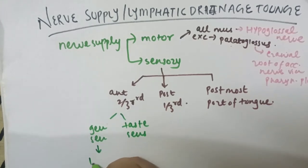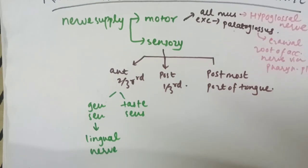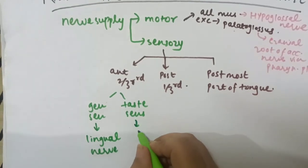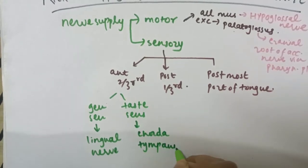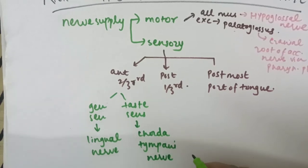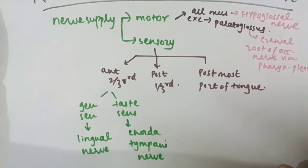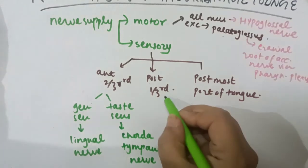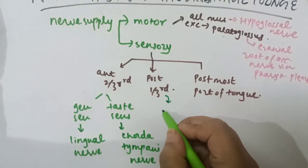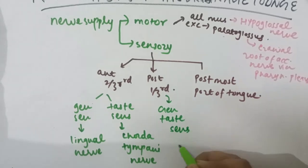For the anterior two-third, there is both general sensation and taste sensation. General sensation is provided by the lingual nerve, and taste sensation is provided by the chorda tympani nerve. You can look at the diagram in the book to understand this easily. The posterior one-third is supplied by the glossopharyngeal nerve for both general and taste sensations.